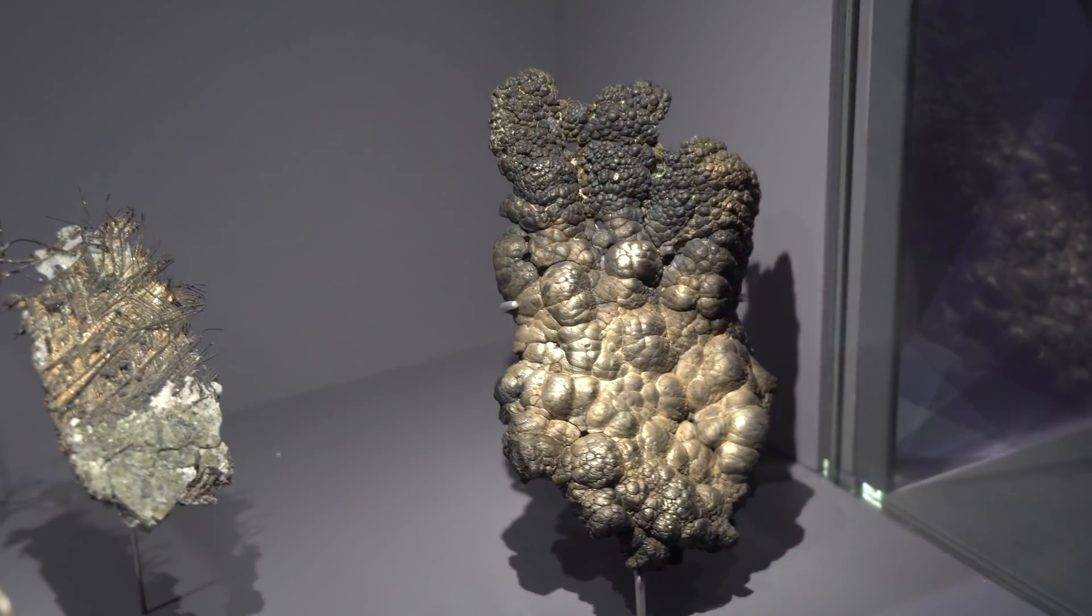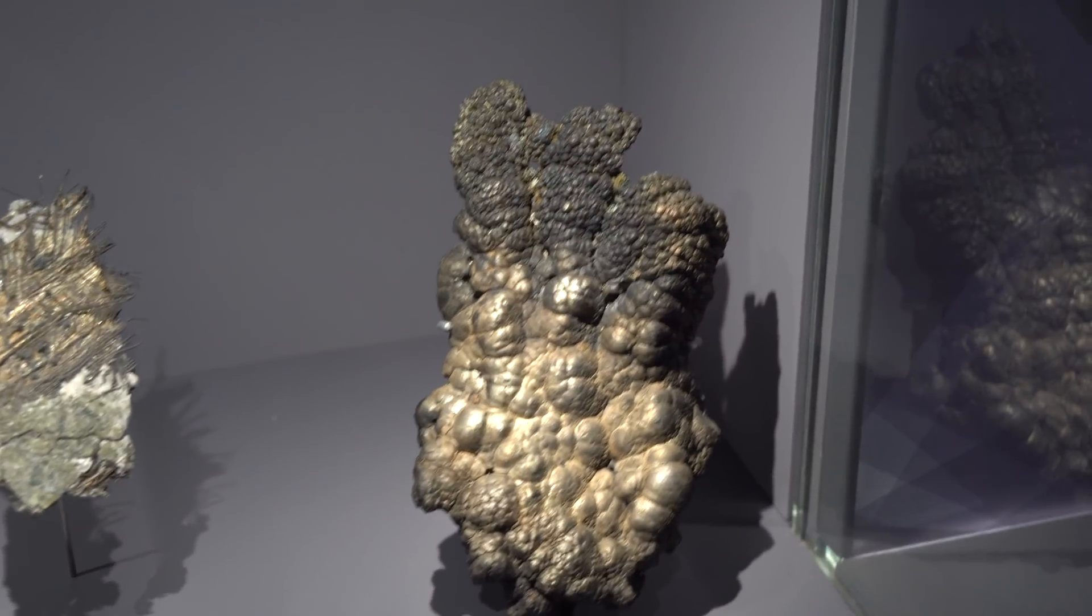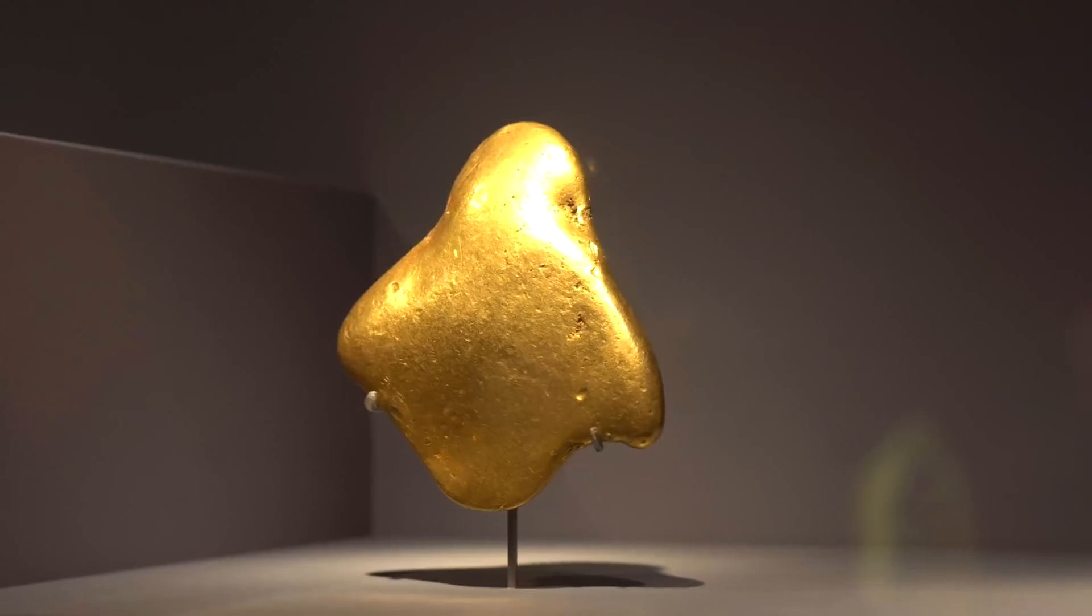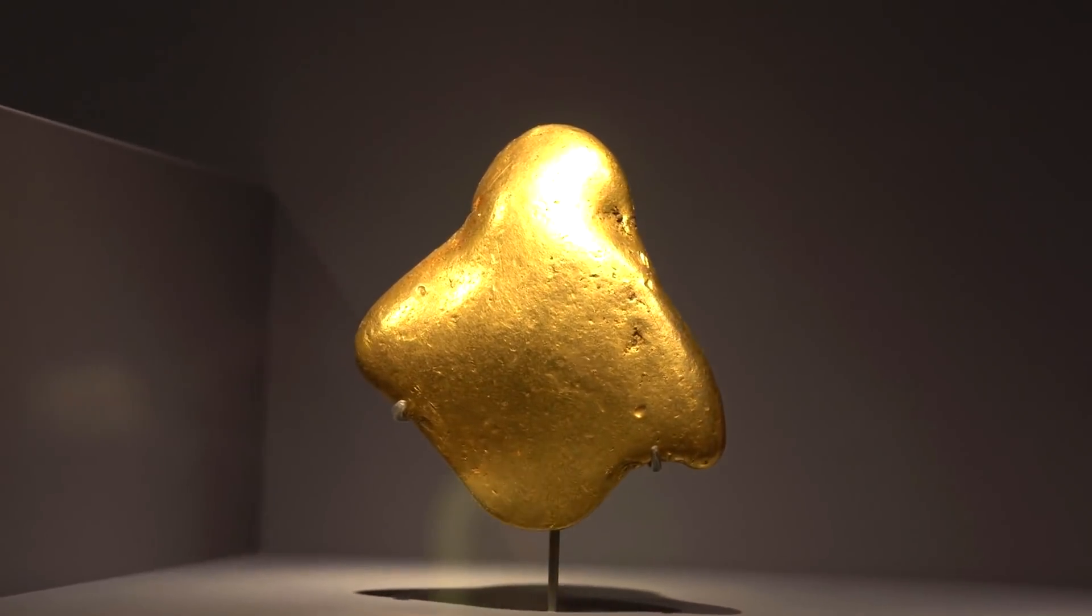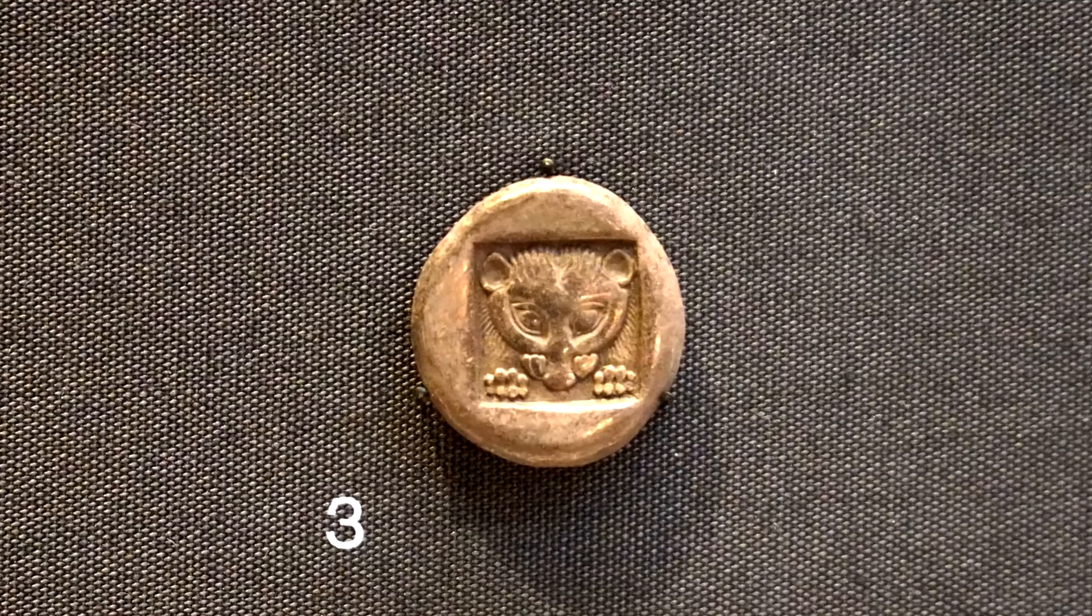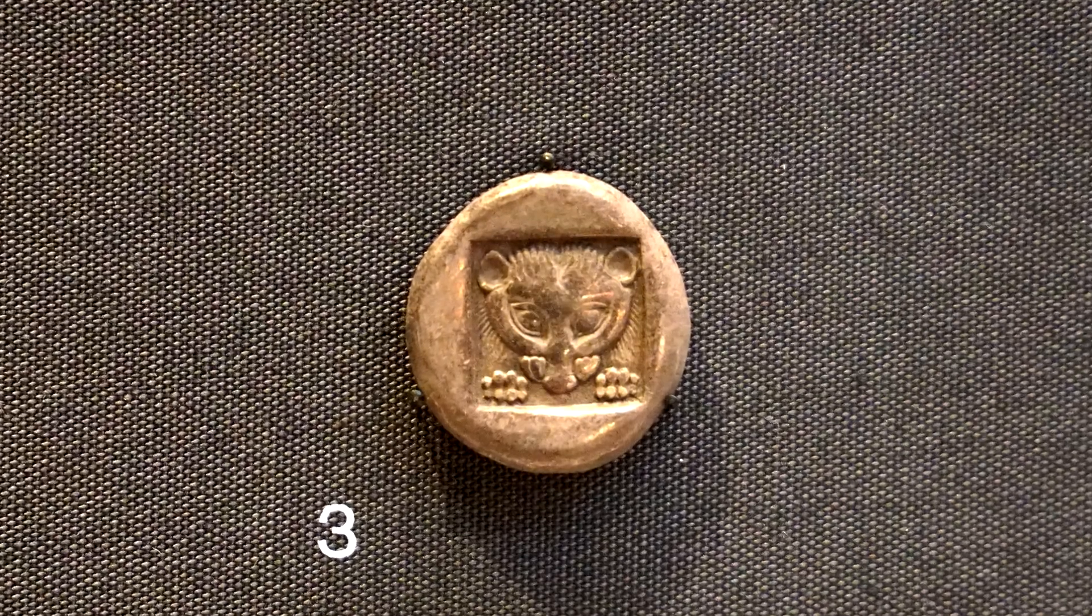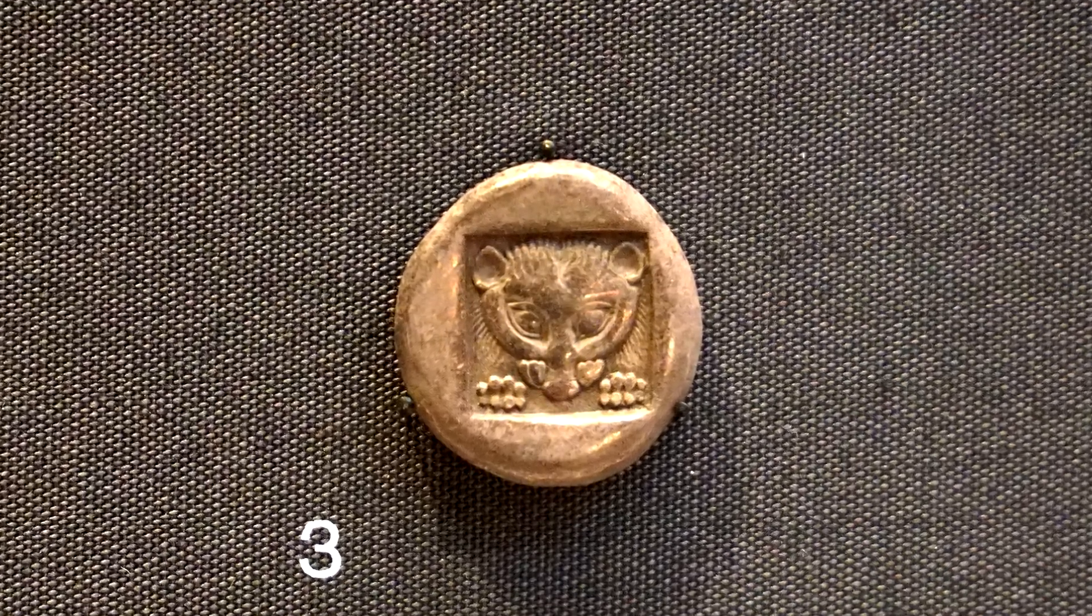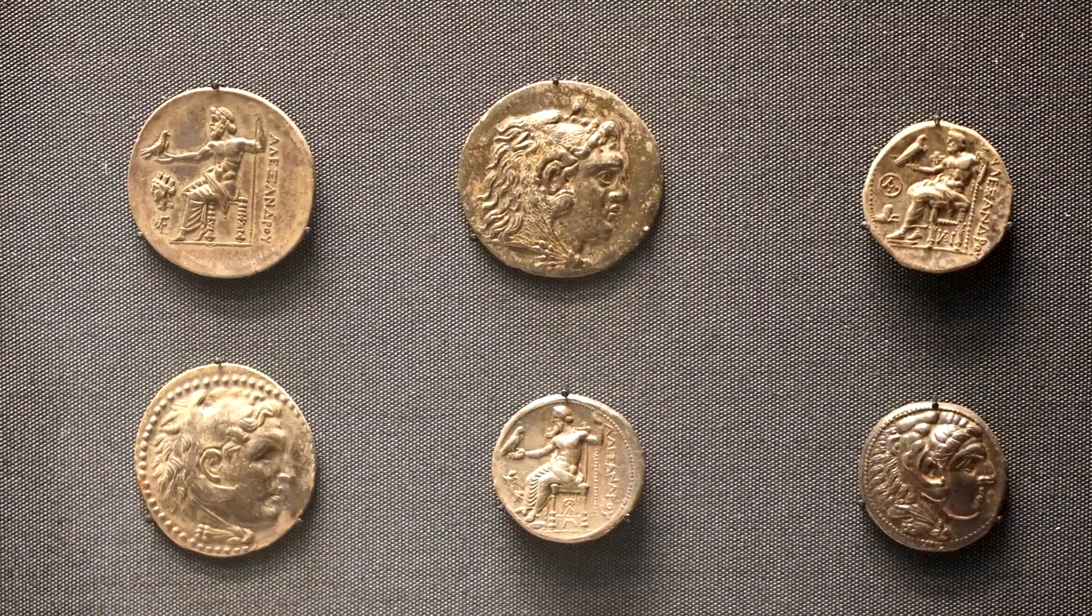But it would quickly tarnish in the air and wasn't sufficiently hard. That is why first coins were not made from pure silver, rather were made from its naturally occurring alloy called Electrum. First coins made from this alloy were used in Lydia, which is a territory located in modern day Turkey.